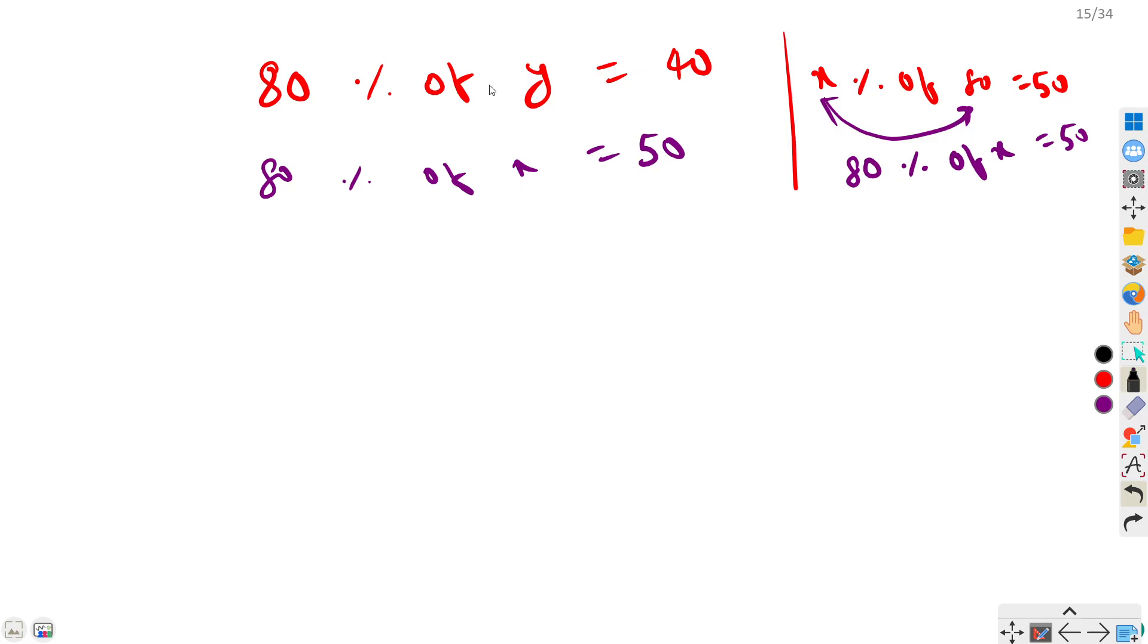Now from here can we find the values of x and y? We can. So let us solve this one. Let's say this is first and this is second. So let us solve the first one: 80 percent of y equal to 40.